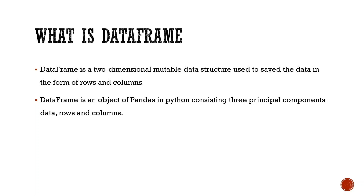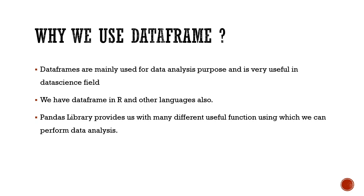So what is a DataFrame? A DataFrame is a two-dimensional mutable data structure used to save data in the form of rows and columns. In short, a DataFrame is a table which has rows and columns where you can put values. It is a data structure in Python — specifically an object of the pandas library — and it consists of three principal components: data, rows, and columns.